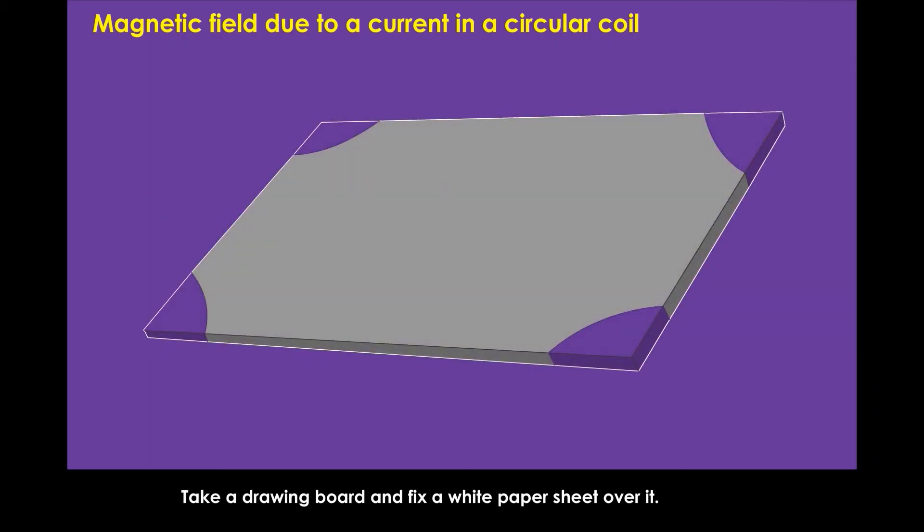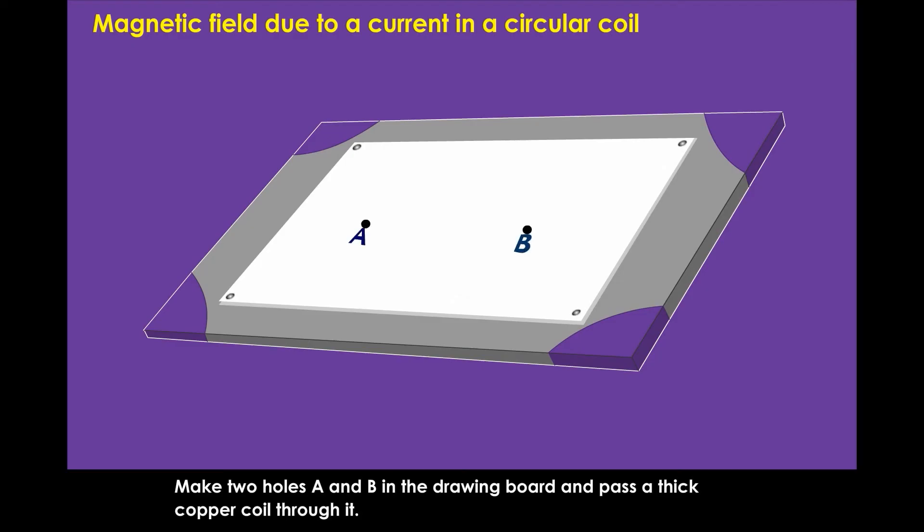Take a drawing board and fix a white paper sheet over it. Make two holes A and B in the drawing board and pass a thick copper coil through it.